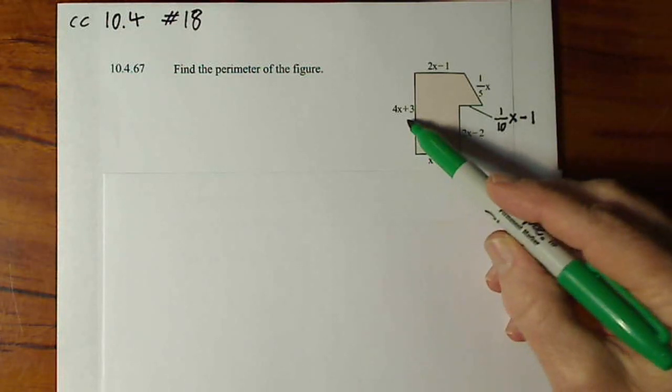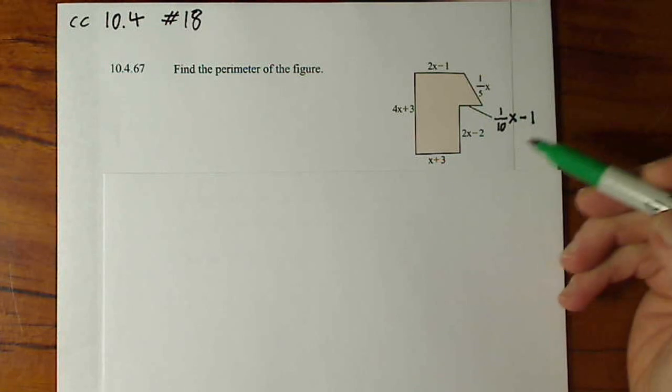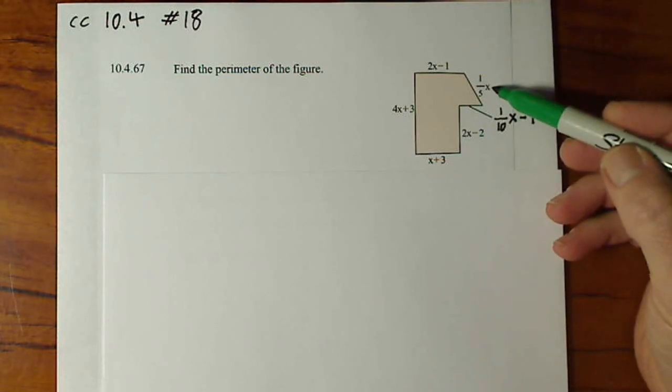These are binomials. That's a binomial, binomial, binomial. This is a monomial.